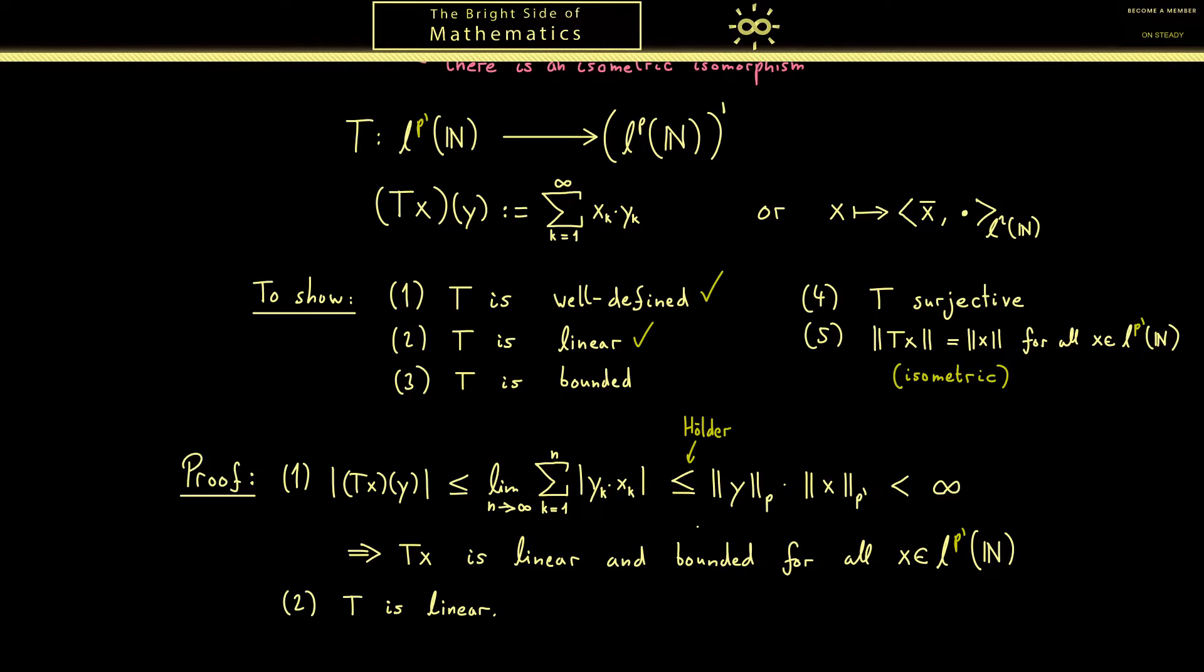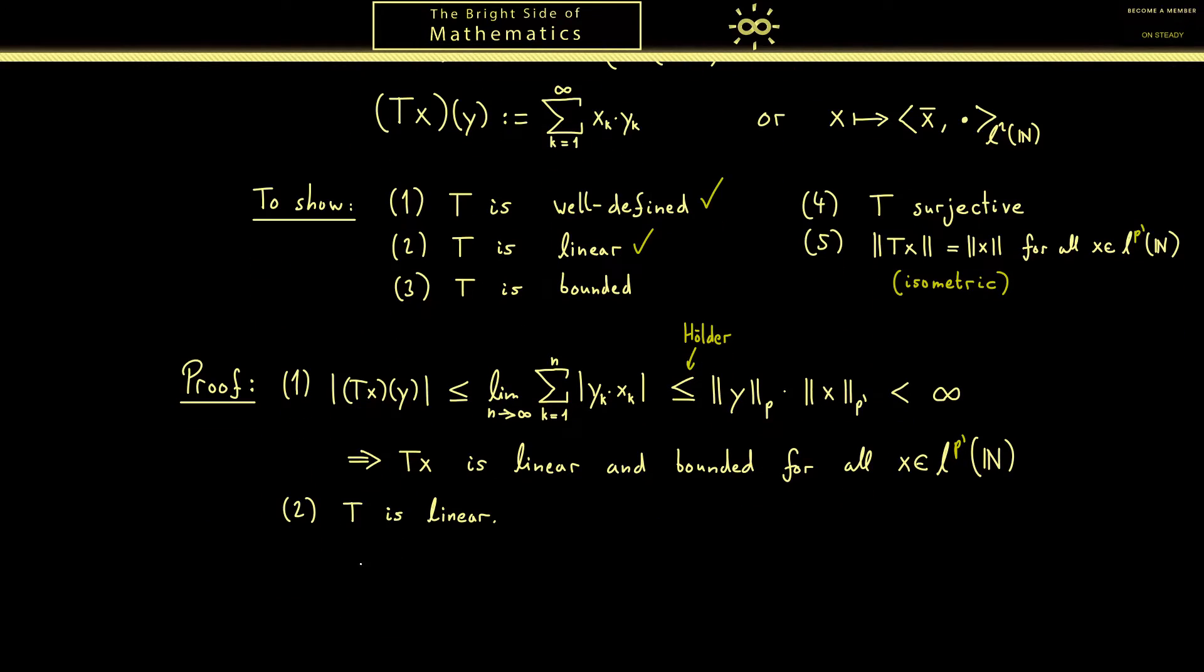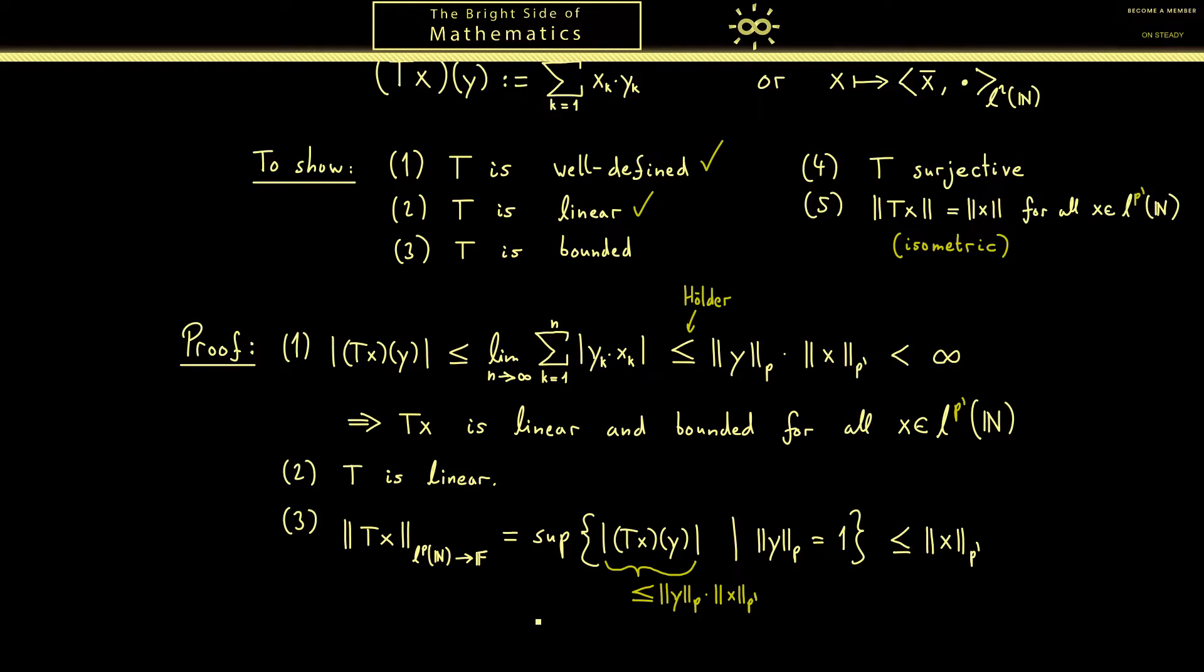Of course this part is almost done with Hölder's inequality from before but still let's write it down. The norm of Tx is the norm in Lp' which means the operator norm. By definition this is just a supremum of this set where we put in all vectors y with norm 1. Using what we have done before with Hölder's inequality we know this is less or equal than the two norms multiplied. In other words the whole operator norm is less or equal than the norm of x. Now to get the operator norm of T itself we have to divide by the norm of x on both sides. Then we take the supremum and get that the operator norm of T is less or equal than 1. Hence we have a bounded operator we can tick part 3 as well.